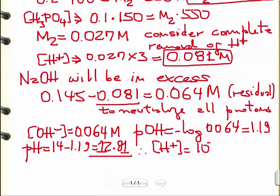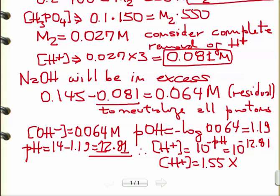Now we can calculate the concentration of protons. Having the pH, we use 10 to the power of minus pH, which is 10 to the power of minus 12.81. Plugging this into the calculator gives 1.55 times 10 to the minus 13 molar. We have the pH and the concentration of protons—that answers the two questions the problem asked.